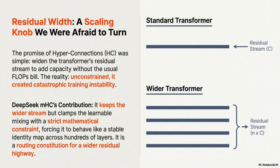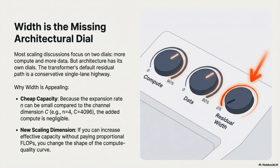Width is really a missing scaling knob. We're used to scaling with more compute, more data, better data - but this is an architectural dial you can turn. The hyperconnection's insight was to ask why just one residual lane. The expansion rate N can be tiny compared to channel size C - the article mentions N equals 4 versus C being 4,096. The added compute is just negligible, so it becomes a cheap way to scale performance and shift that compute-quality curve.